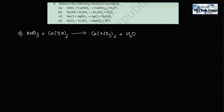Let's write down the number of each element on the left hand side and the right hand side. Hydrogen on the left hand side: one plus two is three. Hydrogen on the right hand side is only two. Nitrogen on the left is one; on the right hand side nitrogen is two. Oxygen on the left: three plus two makes five. On the right: three times two is six, plus one is seven.